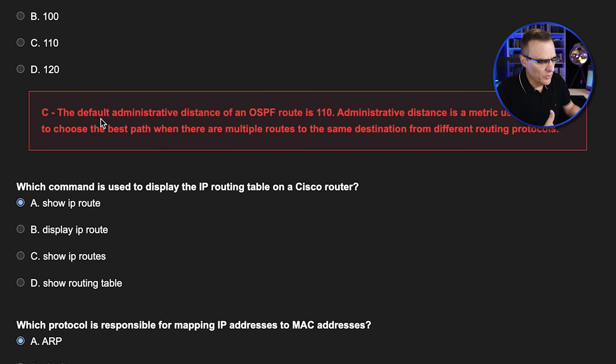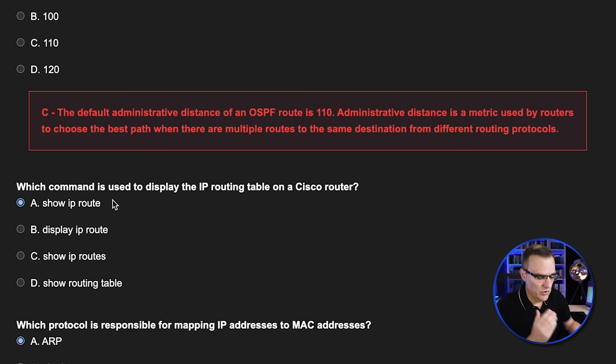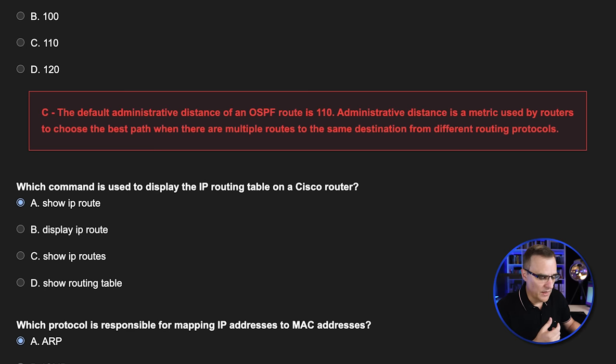For example, if you've got OSPF and you've got BGP or EIGRP, how do you determine which is giving you the best information? I don't want to turn this into a CCNA class — I just wanted to show you that various questions are created by ChatGPT and you could use that to study for your exam.